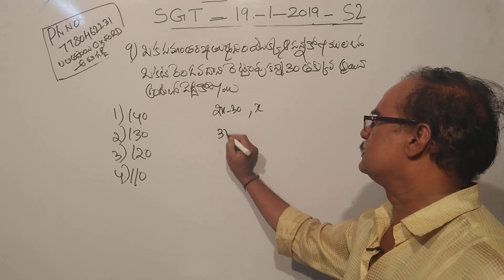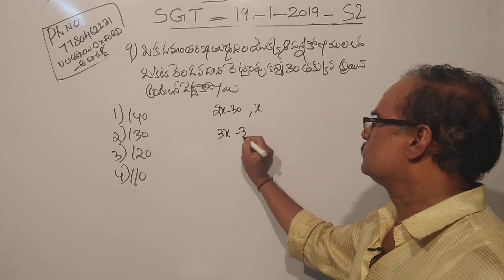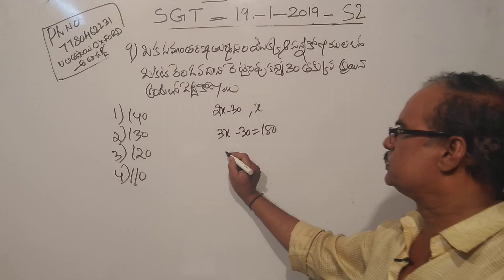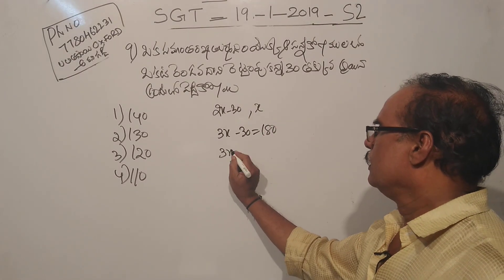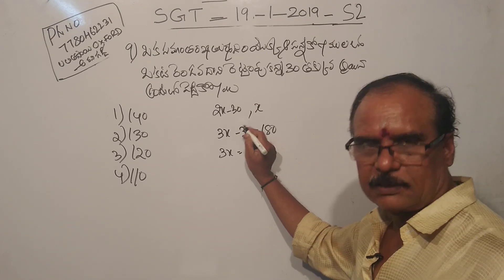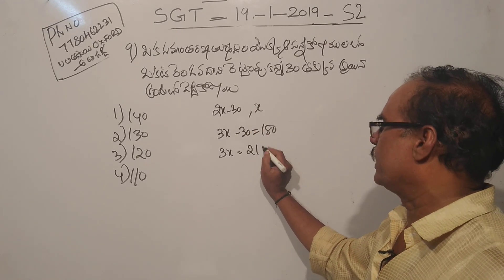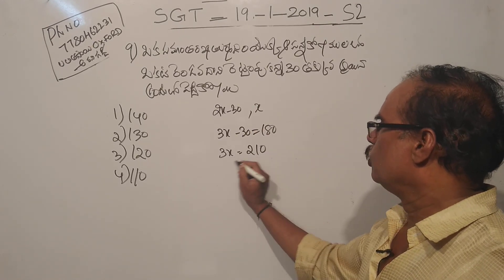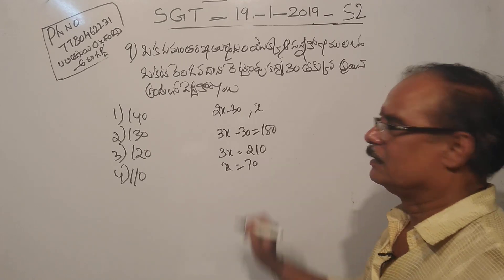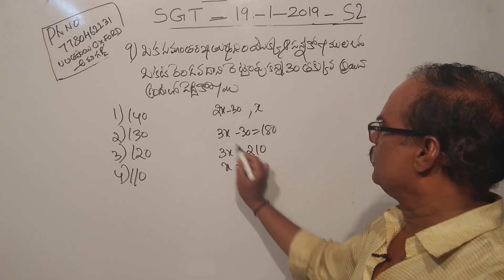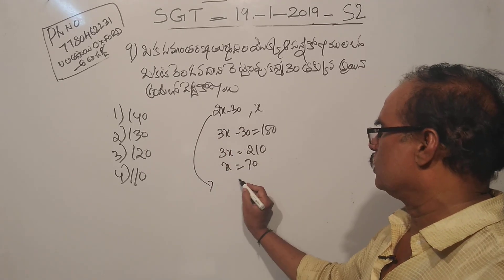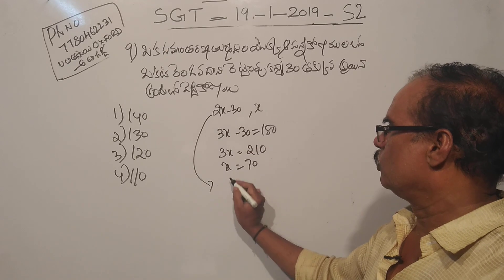So it is 180. 3x is 180. If you use 180, if you use 3x is 180, it will be 80. So 3x is equal to 100. We have 10. So if you want to do this, it will be 0.45.